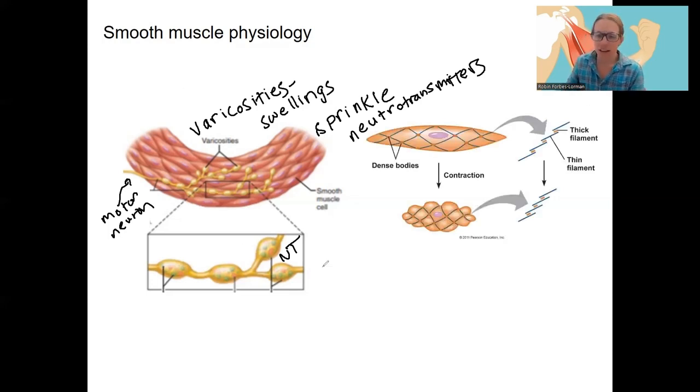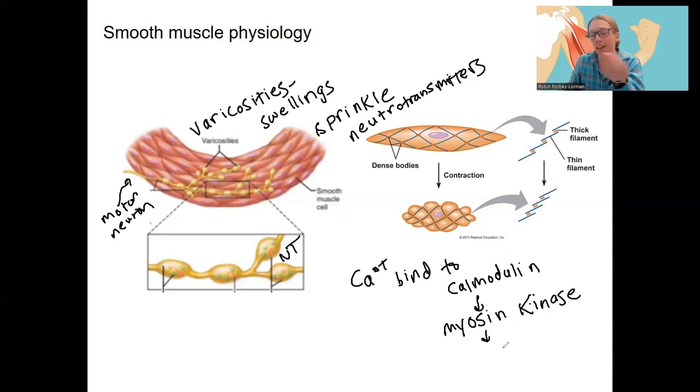Instead, we're going to have calcium bind to calmodulin, which is a different protein, a calcium modulated protein that is going to activate myosin kinase, which is going to phosphorylate the myosin heads. So that is similar to our skeletal muscle. So myosin kinase, so that we can phosphorylate our myosin head and they can bind to actin. So that initiation step. So phosphorylated myosin binds to actin. So we still have those thick and thin filaments.